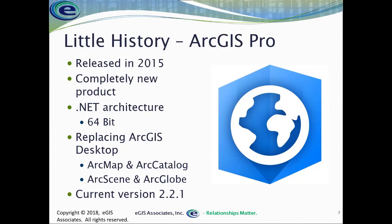ArcGIS Pro is up to version 2.2.1. I've had the opportunity to work with it since before version 1, back when it was still in beta. Esri is really putting all of their desktop development power into ArcGIS Pro, and each new release has an increasing level of functionality. It's probably 98% of the way to matching ArcMap and ArcCatalog. If you're an average ArcGIS user, you could probably shift to Pro now and have all the functionality you need.